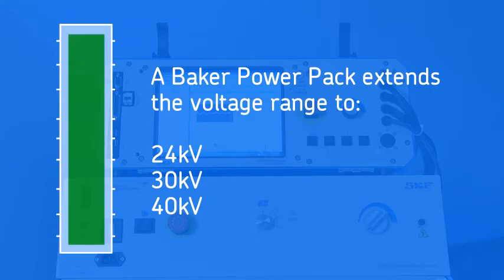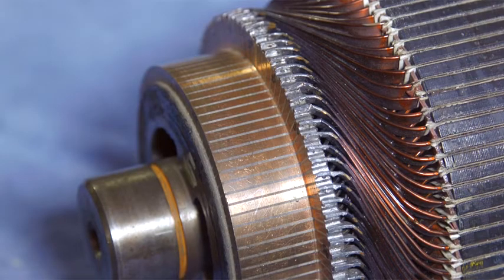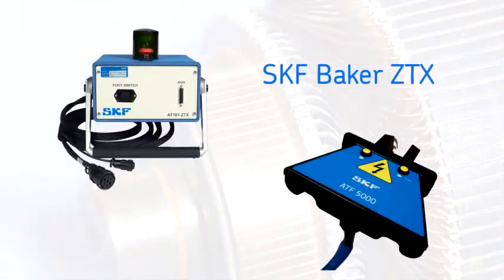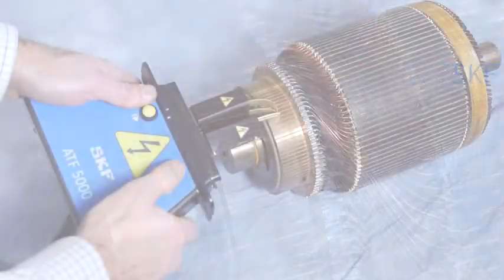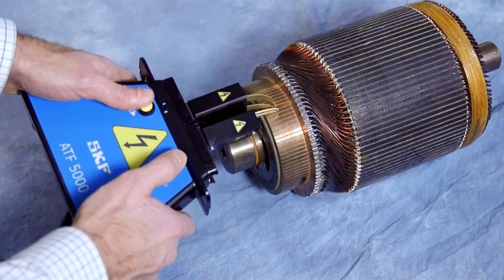DC motor armatures can also be tested using an SKF Baker ZTX adapter with an SKF static motor analyzer. The ZTX lowers the surge voltage while increasing the current. This allows bar-to-bar testing of the armature with excellent fault location.